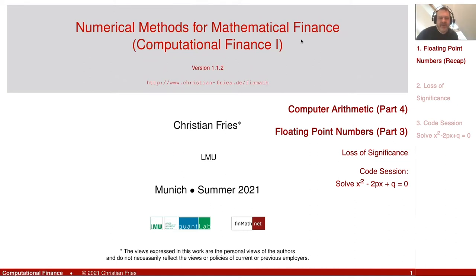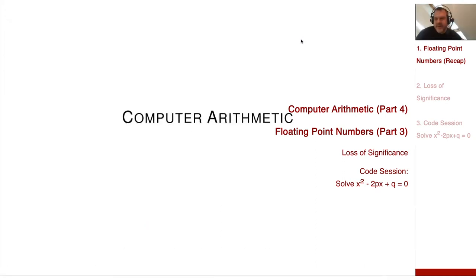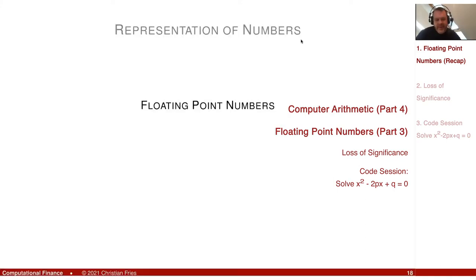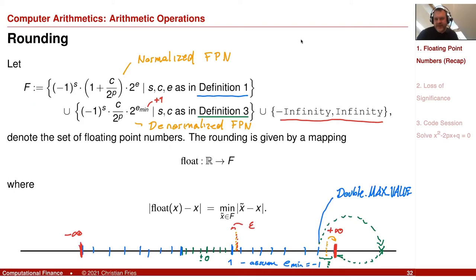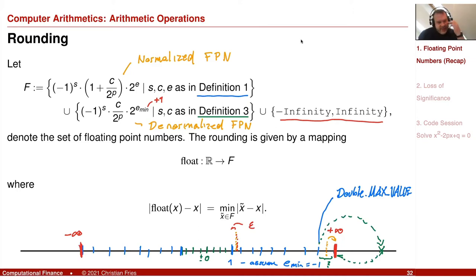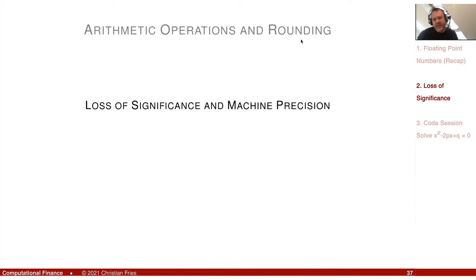I'd like to continue now on computer arithmetic. Our main topic are the floating point numbers. We looked intensively at the representation of the numbers and the rounding. The picture we have is that we have a discretization and some numbers are rounded to get the nearest representative in this set. A big issue is that here the epsilon distance, at which I'm rounding to the next number, defines the machine precision. And there is an effect of this rounding, which is loss of significance.